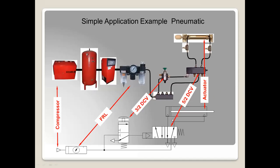This is the actual diagram as well as the symbolic representation of the pneumatic system. The compressor is shown first, then the FRL unit — filter, regulator, and lubricator — which will be discussed in detail in the next session, followed by the direction control valve and the actuator.